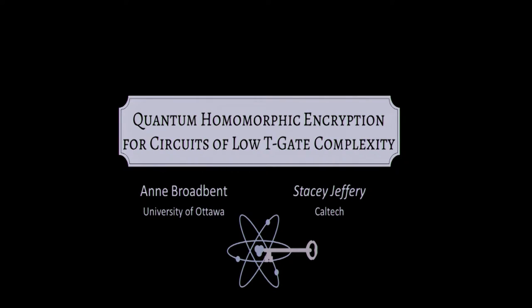This is for circuits of low T-gate complexity. A T-gate is a kind of quantum gate which you should think of as being analogous to a multiplication gate. The results I'm going to present are a quantum version of a homomorphic encryption scheme that is homomorphic for circuits with arbitrary addition gates and some small number of multiplication gates.